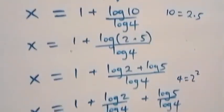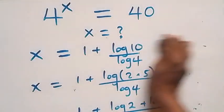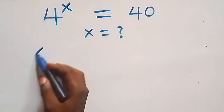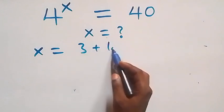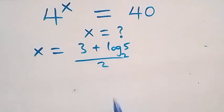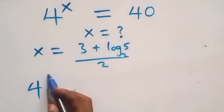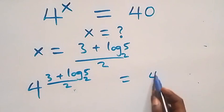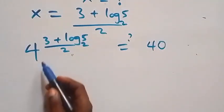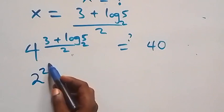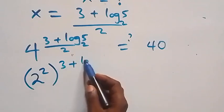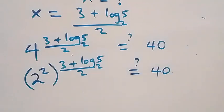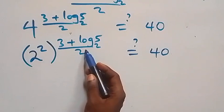Now let's check if this satisfies the original problem. We substitute x equals (3 + log base 2 of 5) over 2 into 4^x. We get 4 raised to power (3 + log base 2 of 5) over 2, which should equal 40. We express 4 as 2 squared, giving 2 squared raised to power (3 + log base 2 of 5) over 2.